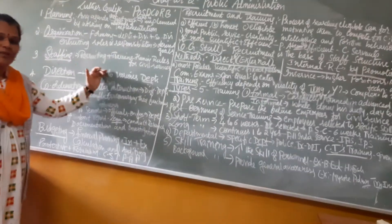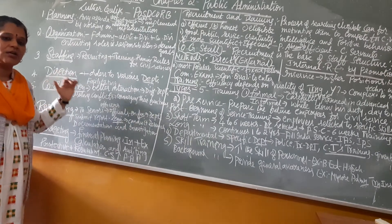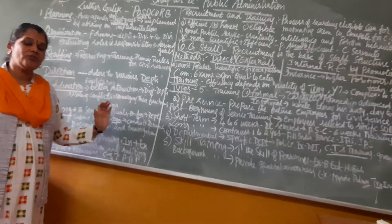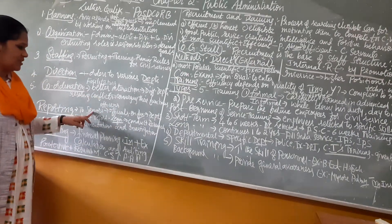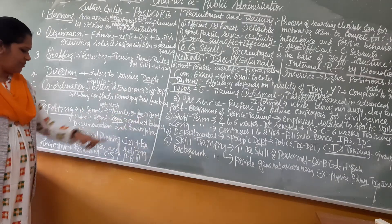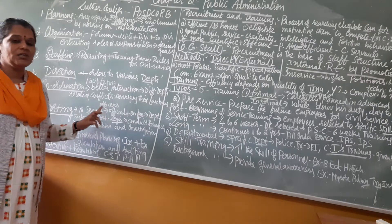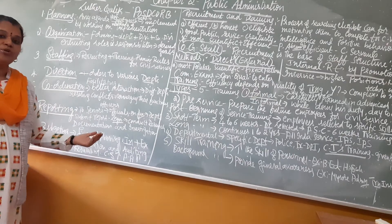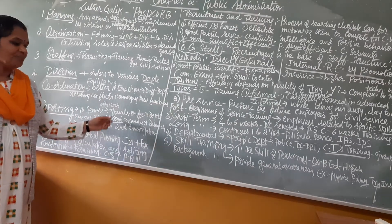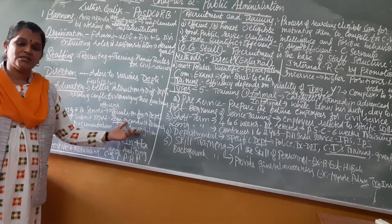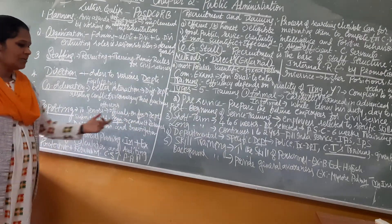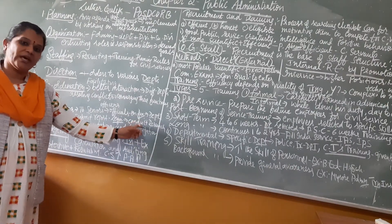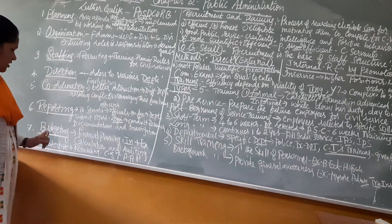Next is reporting. Once a function has taken place — everything planned and organized — the officials have to give reports to senior officers. The different departments, after performing their functions, submit a report to the legislature. They may conduct research, do documentation, or carry out investigations to give clarity about the goals which they have achieved.